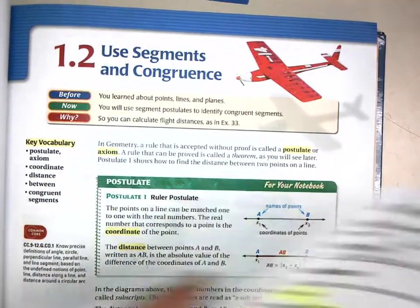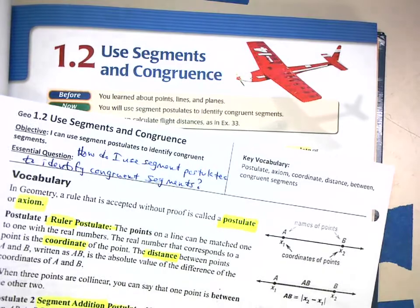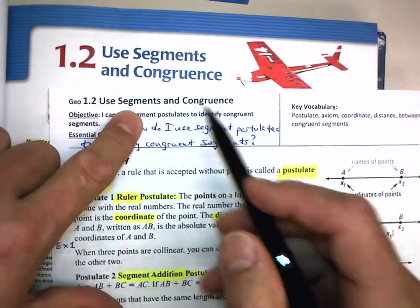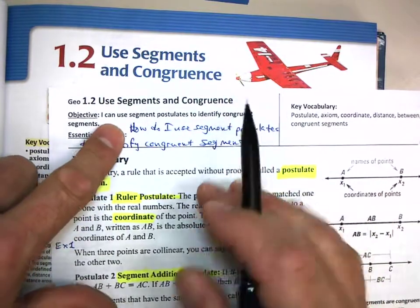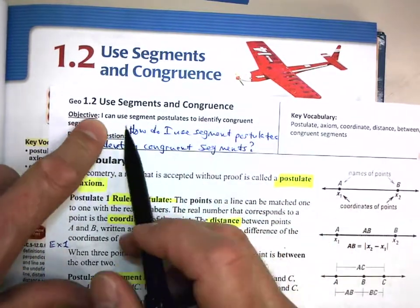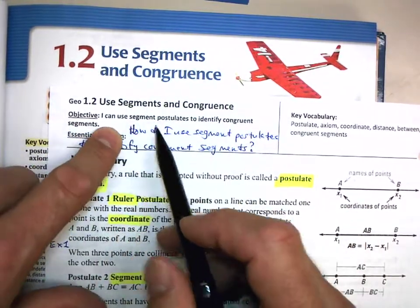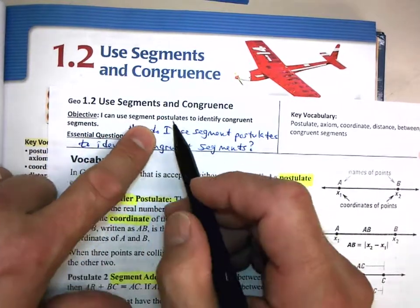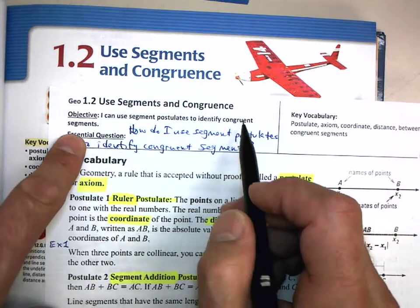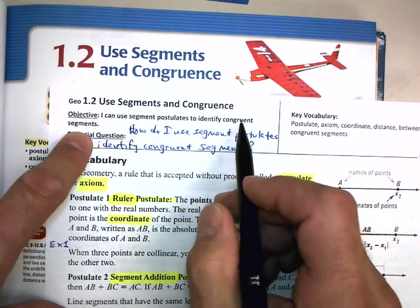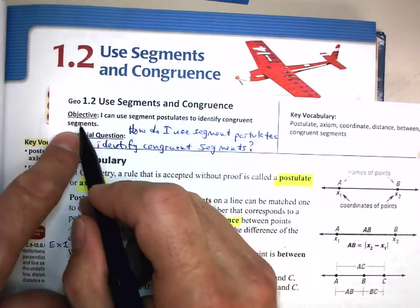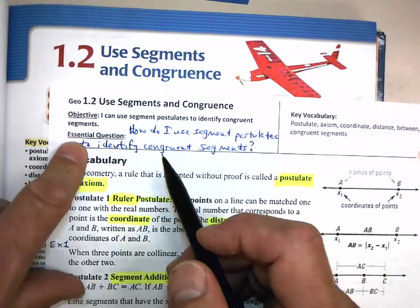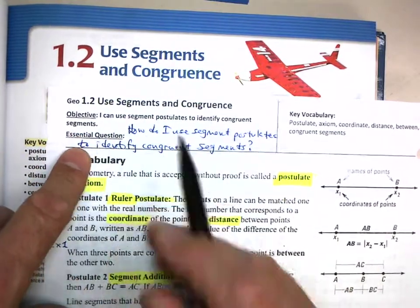Welcome to section 1.2: Use Segments and Congruence. Our objective is I can use segment postulates to identify congruent segments. You probably know what congruent means, but we have some new words going on here.